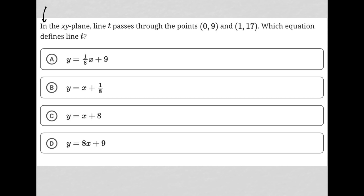If I'm trying to find the equation for a line, I'm always going to use y equals mx plus b, where m is the slope and b is the y-intercept.